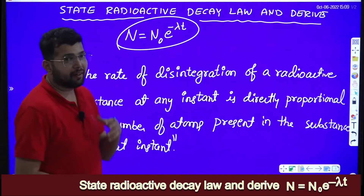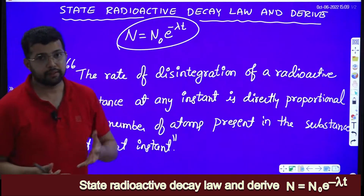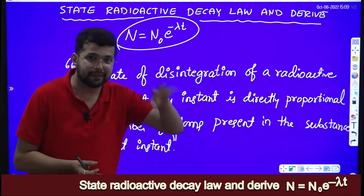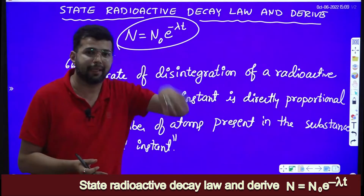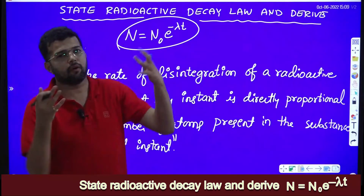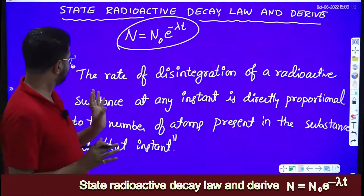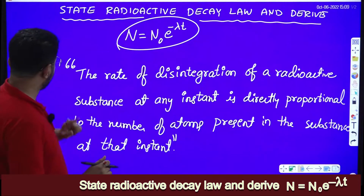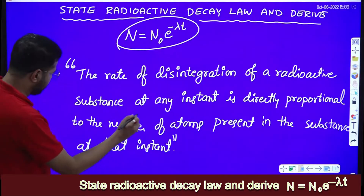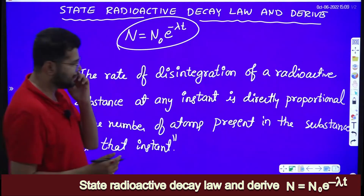Decay law says that the rate of disintegration of a radioactive substance is directly proportional to the number of radioactive atoms present in that sample at that moment. This means if the number of radioactive atoms are more, then the rate of disintegration is more.